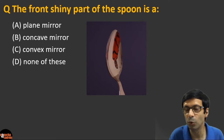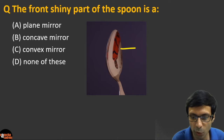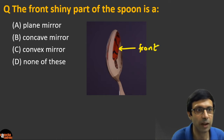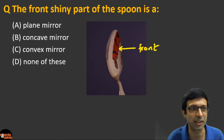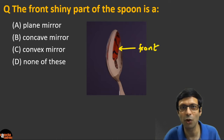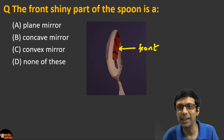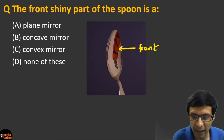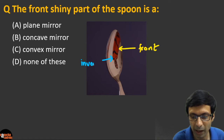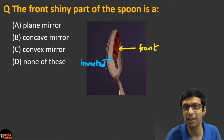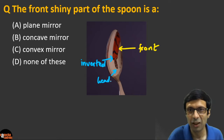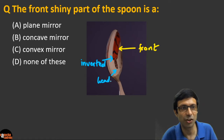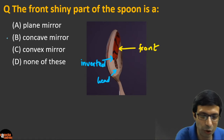Here I have a picture of me looking into the spoon — this is the front portion. Can you see that I'm inverted in this picture? I'm upside down. So what type of mirror forms an inverted image?